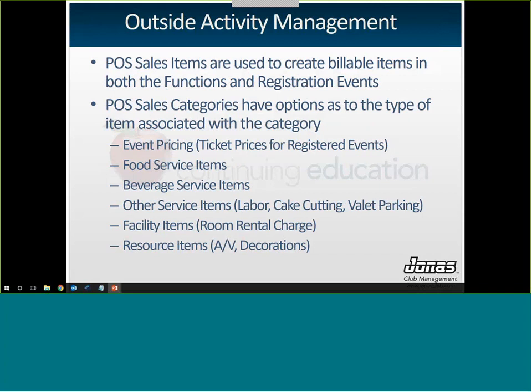We'll go through setups first. Outside of activity management, within your core JONAS program, you'll need point-of-sale sales categories and sales items. Sales items are used to create billable things for both private functions and registration events — you'll need a sales item for each food offering, bar offering, everything you charge for, ticket prices, facility fees, and rentals. Those sales items are all tied to point-of-sale sales categories.